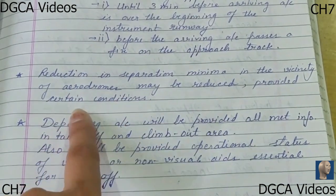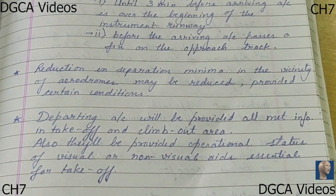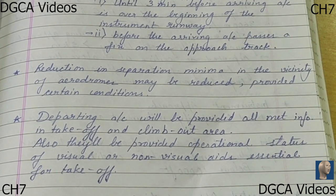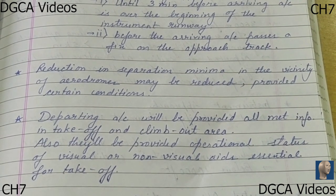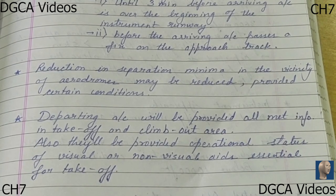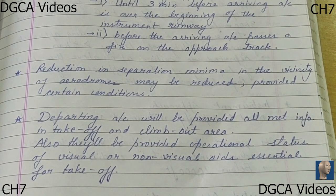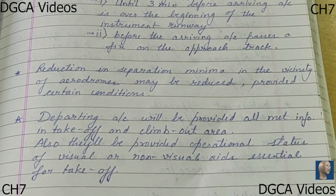Next is reduction of separation minima in the vicinity of the aerodrome, which may be reduced providing certain conditions. Separation minima can always be maintained between aircraft flying in airspace, but when landing or taking off these minima can be reduced keeping in mind: first, that adequate separation can be provided by the aerodrome controller when each aircraft is continuously visible to the controller; second, that the two aircraft are in visual contact with each other; and third, that one aircraft is following the other and can confirm that separation is maintained.